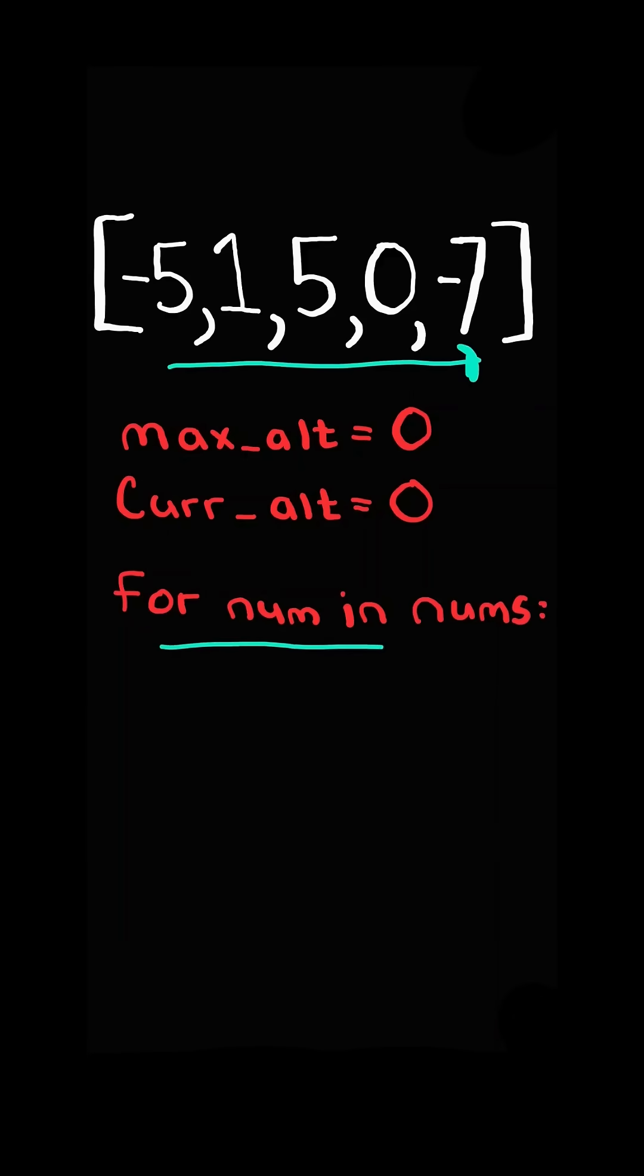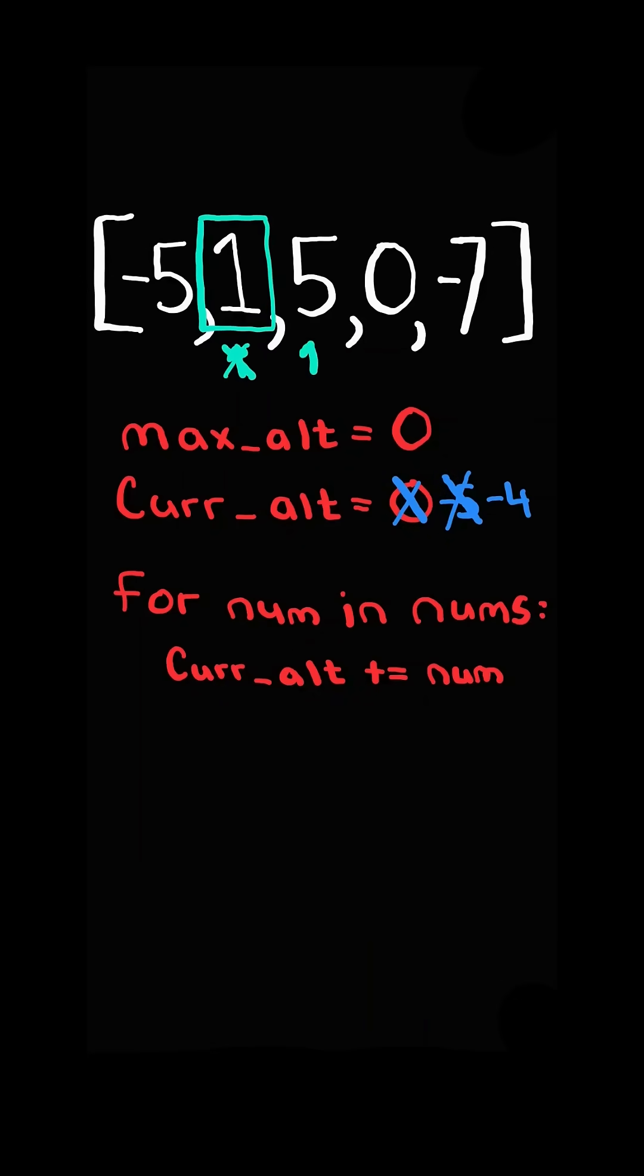We then iterate through the list and add the number to our current altitude and continue. Again, we add the number to our current altitude and continue. We add the number to our current altitude.